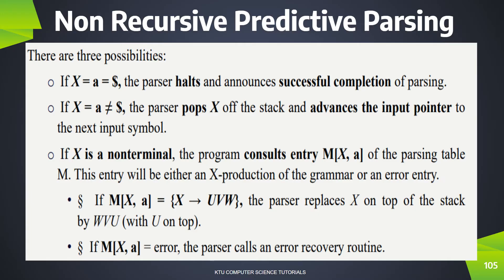We need to go to the next input symbol. In the first case, we will choose the terminal symbols. If x equals a and both equal $, the buffer is the same as $ and we will stop the process. In the second case, the stack top and the buffer point are the same but not equal to $. It is a terminal symbol, so we will pop out the stack top and advance the symbol. Now let's go to Terminals.